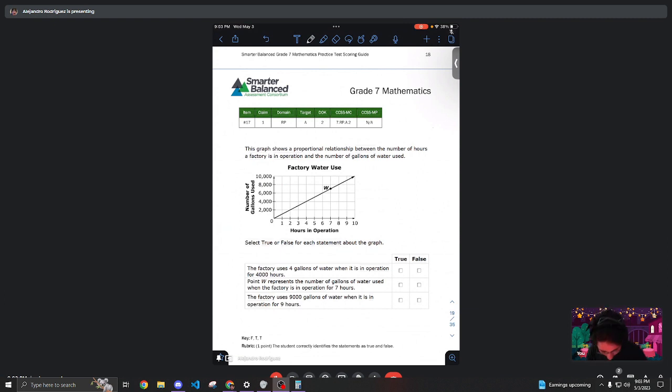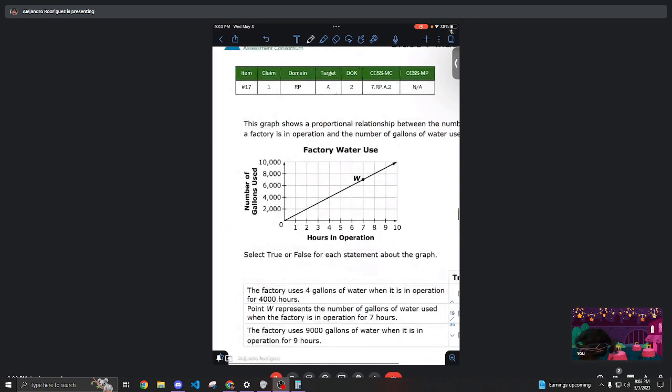So they give us a graph, and here's how you read it. Right here in the bottom, we have the hours in operation. So for one hour, I'm gonna go up until I hit the line, and I hit the line right here.